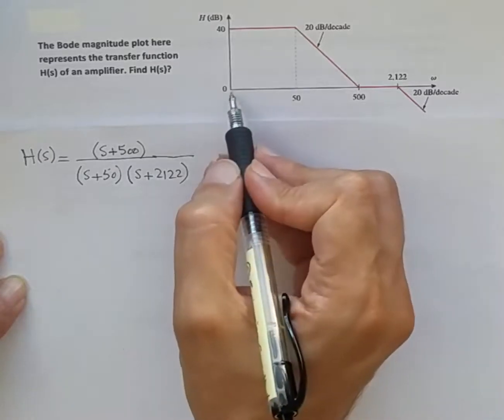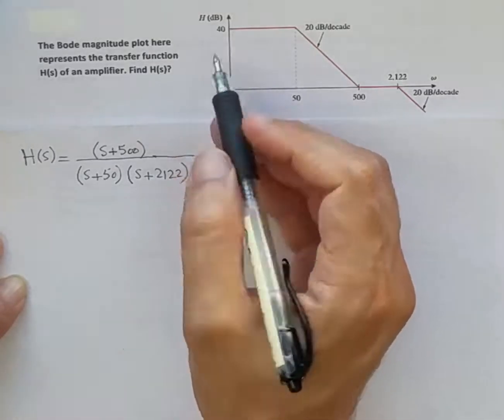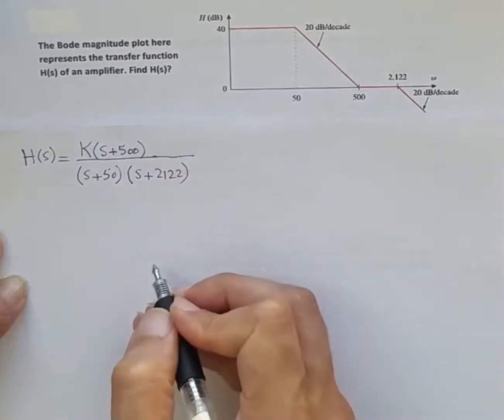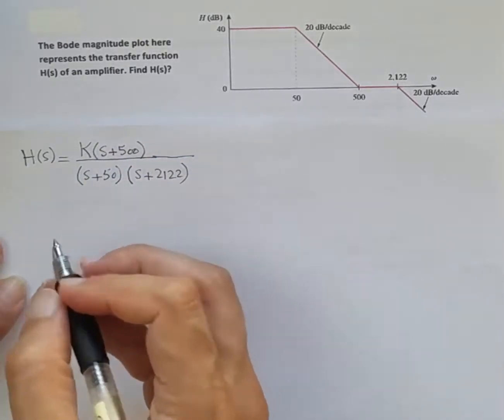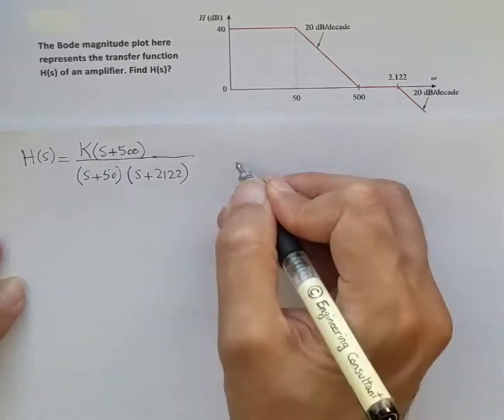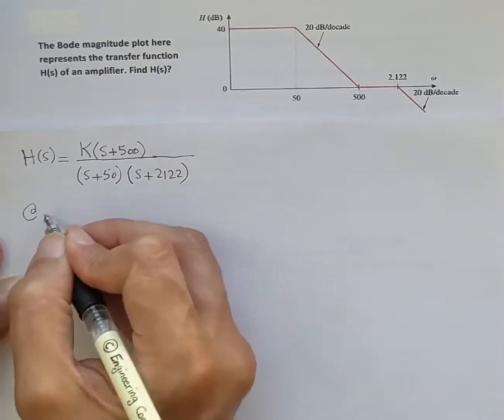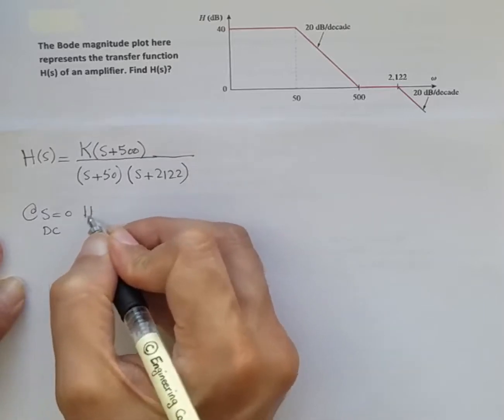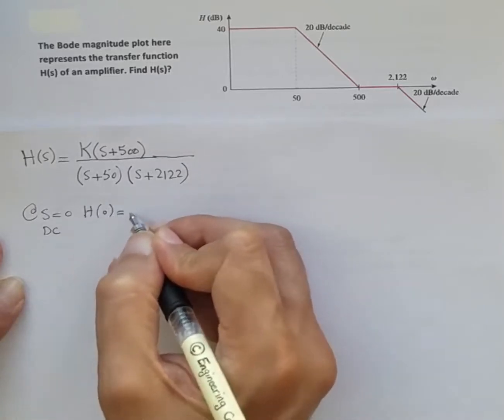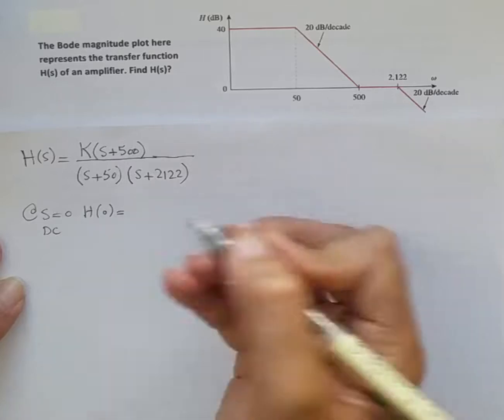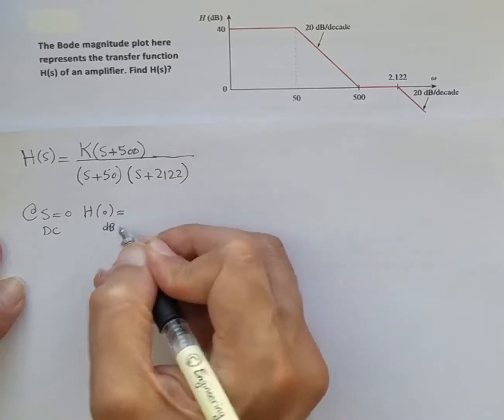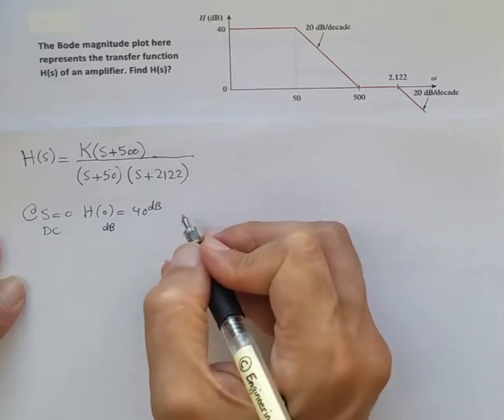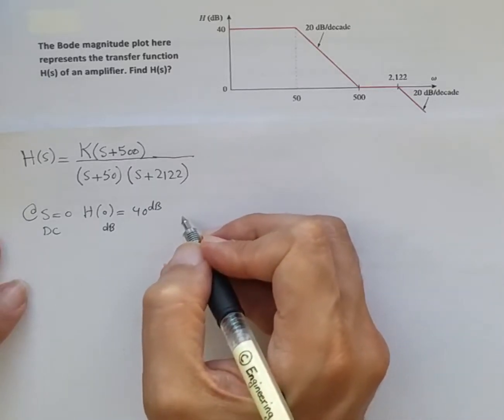Because we are targeting a specific gain at frequency 0, or DC, which is 40 dB, we need to have a constant K in the numerator which we have to find. So how do we find constant K? At frequency s = 0, which means DC, H(0) in dB is 40 dB.